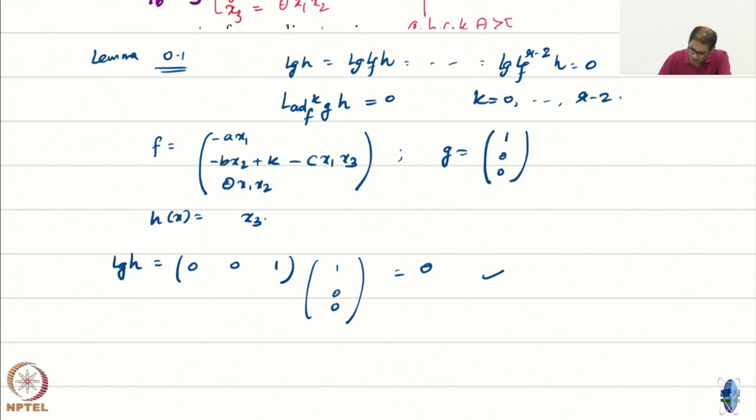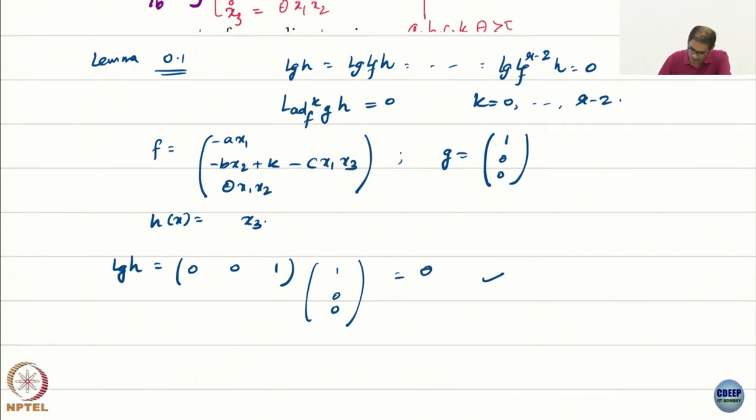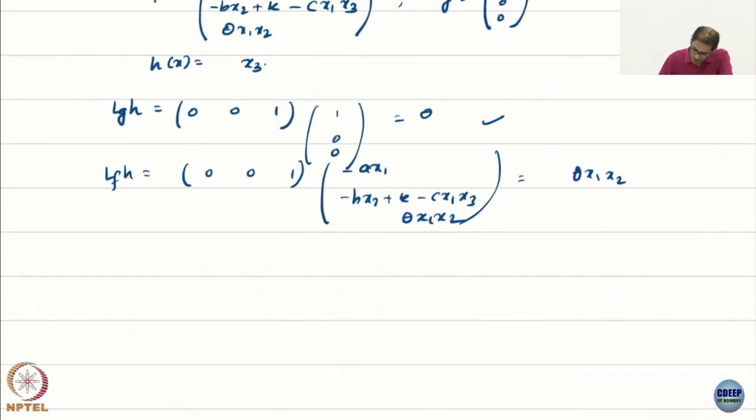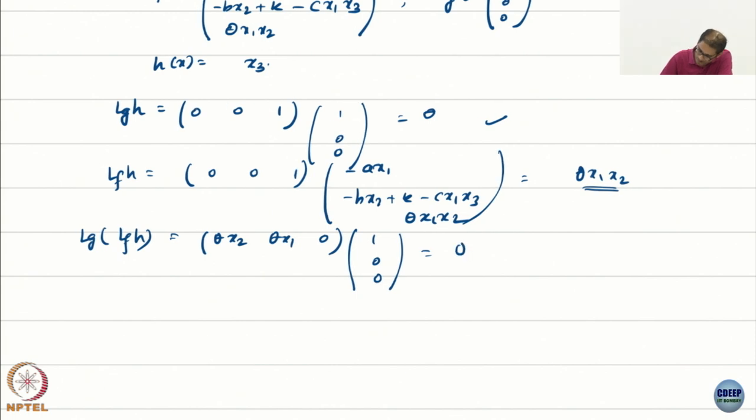Let us do lfh. What is lfh first? lfh is again 0, 0, 1 multiplied by this mess, minus ax1 minus bx2 plus k minus cx1x3 theta x1x2. What is this, theta x1x2. Now we do lg of lfh. Now we want to do lg of lfh, what do I have to do, I would take partial of this guy with respect to x. What is it? Theta x2, theta x1, 0. And I multiply with g. Now did I get something, thank god, I got something. This is what, theta x2, done.